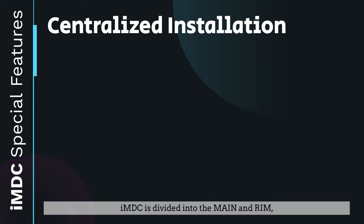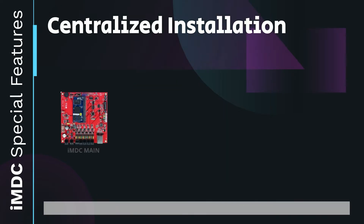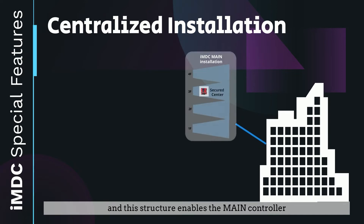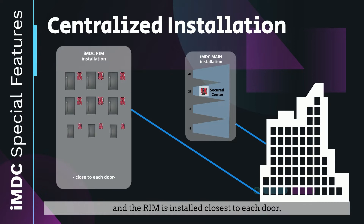1. Centralized Installation. IMDC is divided into the main and rim. This structure enables the main controller to be installed in the most secured center separately from the rim, and the rim is installed closest to each door.